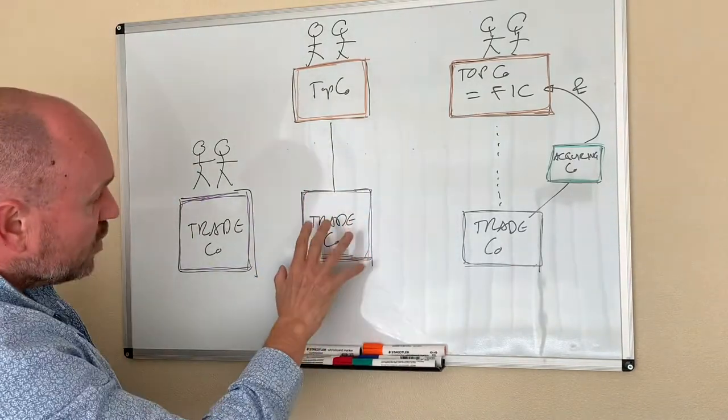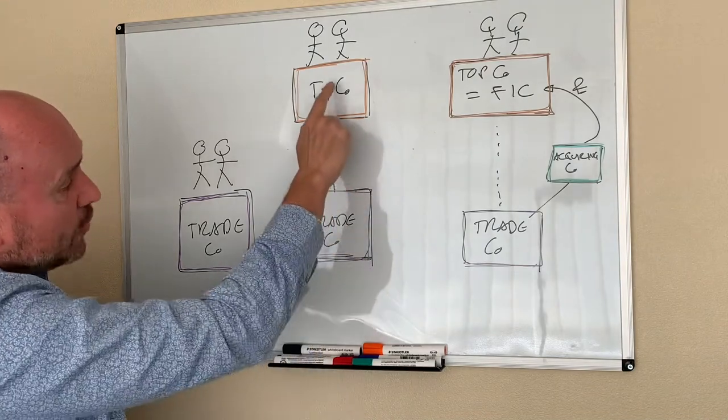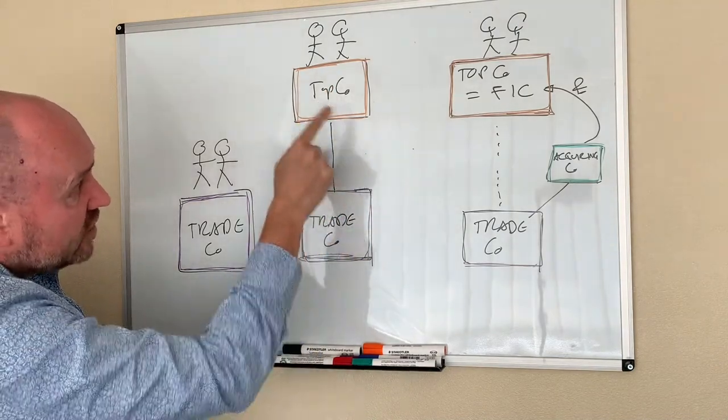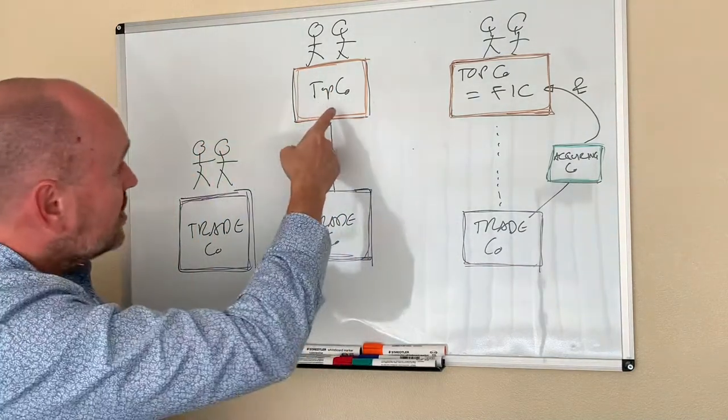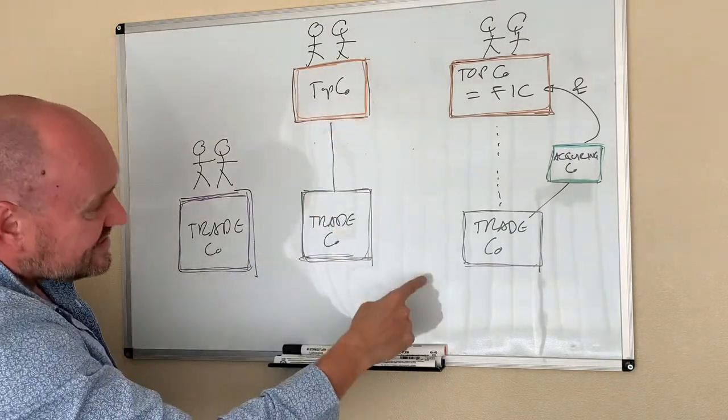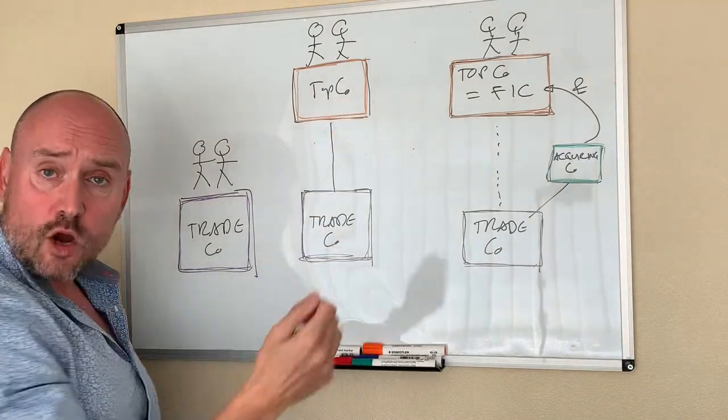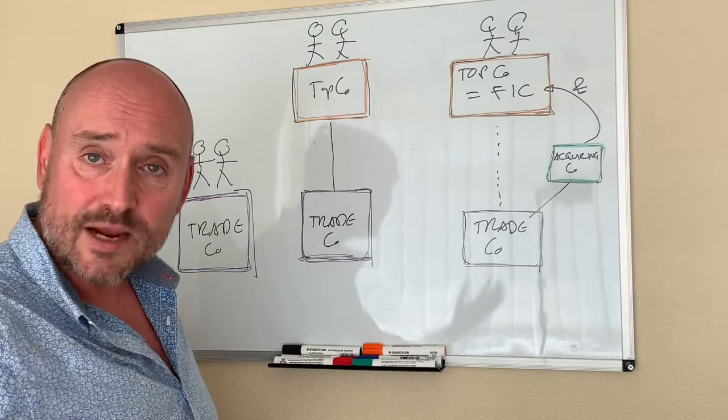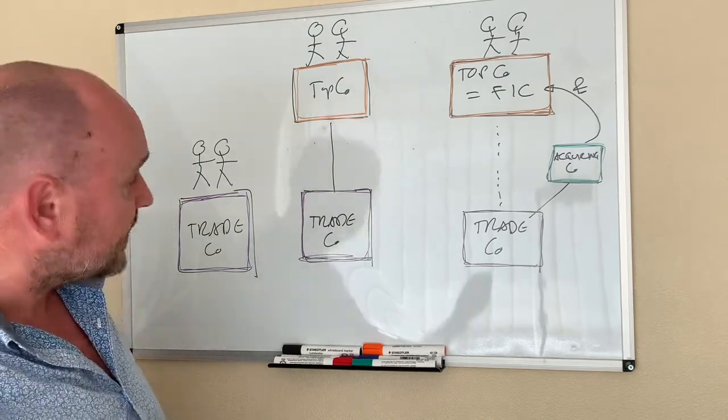So we've moved all the valuable assets from here up to here and that commercially protects all the assets because they are ring fenced if anything happened to the TradeCo, if the TradeCo was sued, attacked by creditors or an action brought against it.